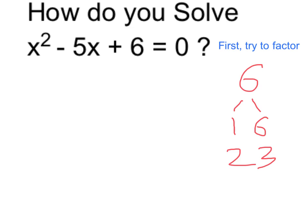Now of course the positives aren't going to add up to the negative 5, but if we were to make this a negative 2 and a negative 3, when we multiply them we still get positive 6, and when we add them we get negative 5.